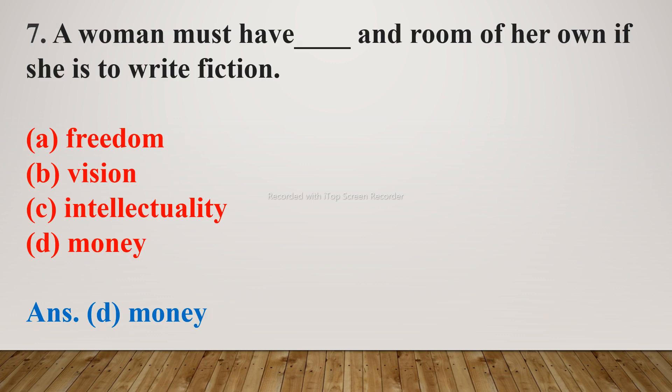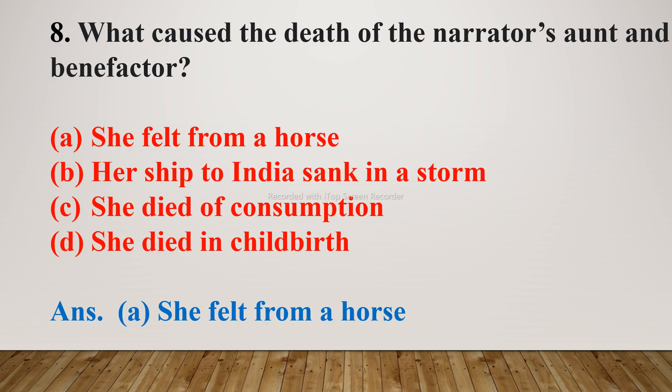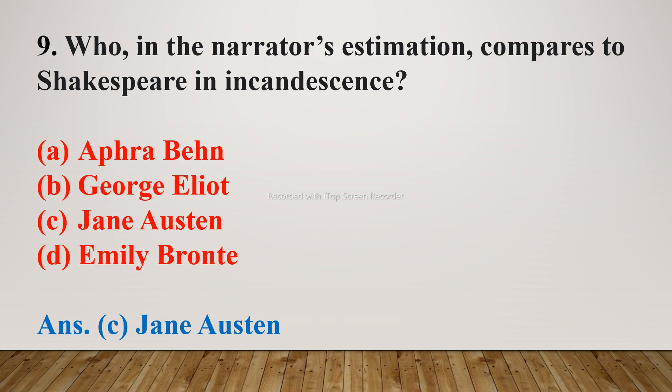Question number 7: A woman must have blank and a room of her own if she is to write fiction. Options are A. Freedom, B. Vision, C. Intellectuality, D. Money. The right answer is D. Money. Question number 8: What caused the death of the narrator's aunt and benefactor? Options are A. She fell from a horse, B. Her ship to India sank in a storm, C. Died of consumption, D. She died in childbirth. The right answer is A. She fell from a horse.